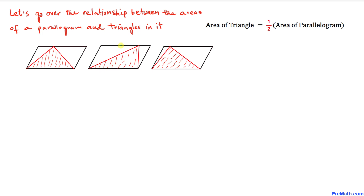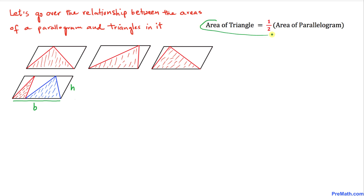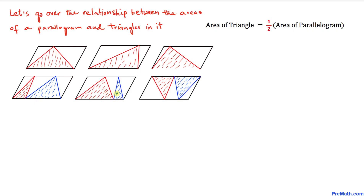In another scenario, we have two shaded triangles inside a parallelogram. The combined base of these two triangles equals the base b of the parallelogram, and the height of both triangles is h. Therefore, the combined area of these two shaded triangles is one-half the area of the parallelogram. Similarly, in another case with two shaded triangles sharing the same base and height, their combined area is also one-half times the area of the parallelogram.